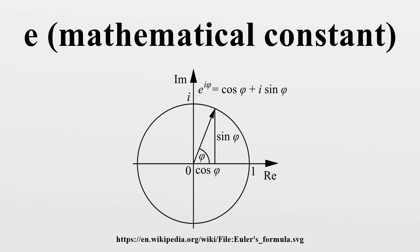The natural logarithm of a positive number k can also be defined directly as the area under the curve y equals 1/x between x equals 1 and x equals k, in which case e is the number whose natural logarithm is 1.